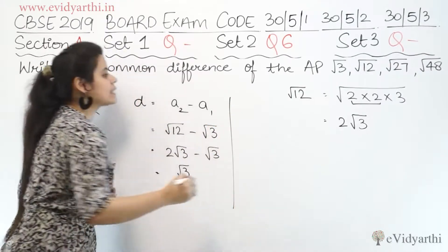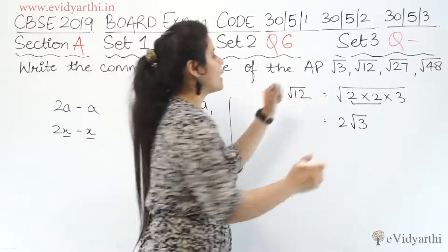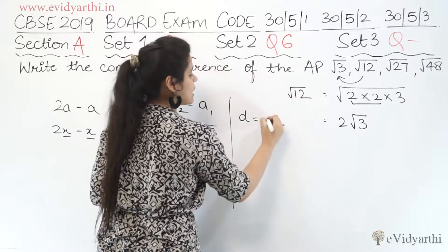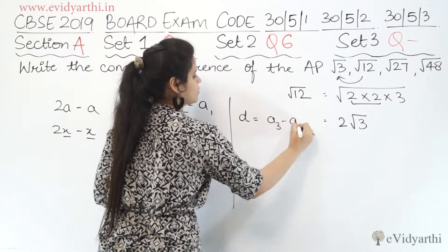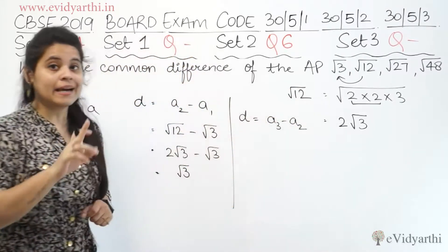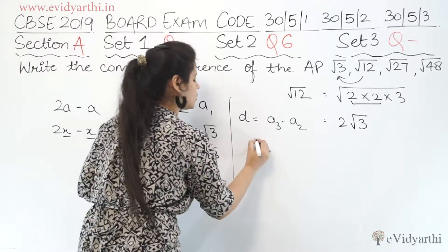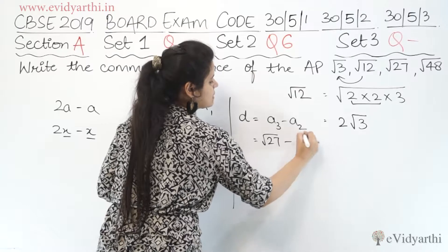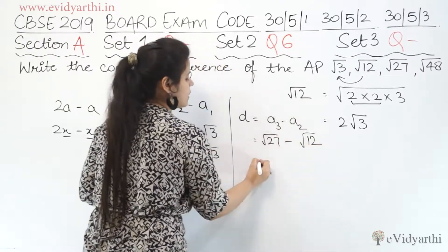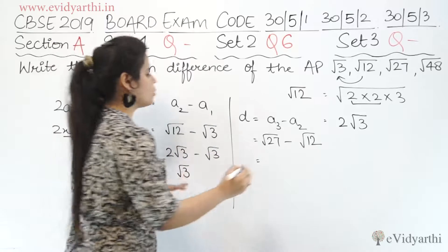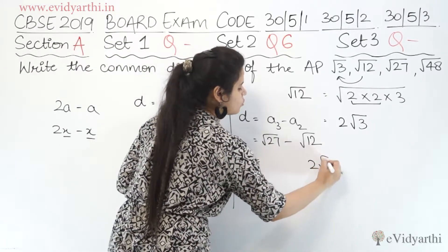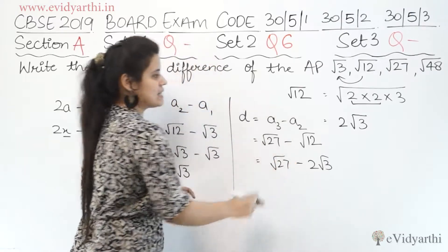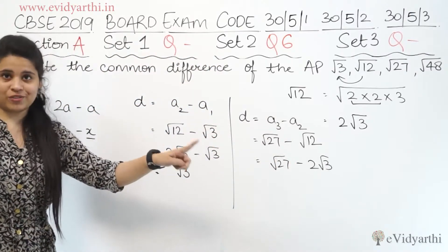Now let's cross-check by finding the common difference from the 3rd and 2nd terms. So we compute 3rd term minus 2nd term: √27 minus √12. I already know √12 = 2√3. Now how do we write √27? We need to do the prime factorization of 27.